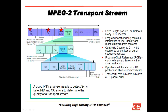A good IPTV analyzer needs to detect if there are any errors to the sync byte, the PID, and the continuity counter, because these are critical. If we lose the sync byte, we can't find the transport stream. If we lose the PID byte, we won't be able to tell what it's carrying. If we lose the continuity counter, we won't be able to put these transport streams back together, and then the set-top box will not be able to decode the video.